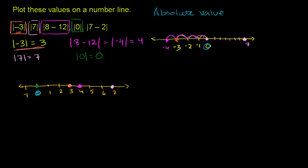And we have one left: the absolute value of 7 minus 2. Well, 7 minus 2 is 5, so this is the same thing as the absolute value of 5. How far is 5 away from 0? It's just 5 away — it's almost too easy, and that's what makes it confusing. 5 is 1, 2, 3, 4, 5 spaces from 0, so the absolute value of 5 is 5. We plot it right there.